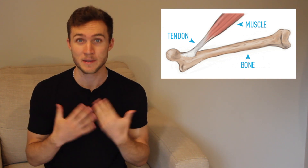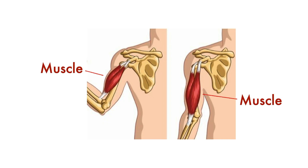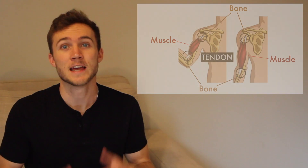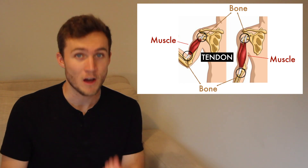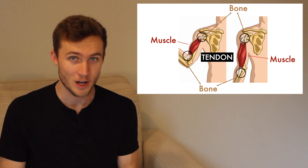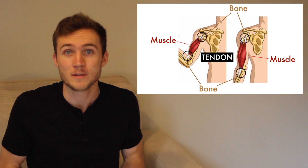Let's use the biceps muscle as a quick example. This is the biceps muscle itself, and these are the bones that it attaches to. What connects the muscle to the bone — that connective tissue there — those are the tendons. If the tendons weren't there, the muscle would not be attached to the bone and thus unable to do its job. This makes tendons really important for human movement.